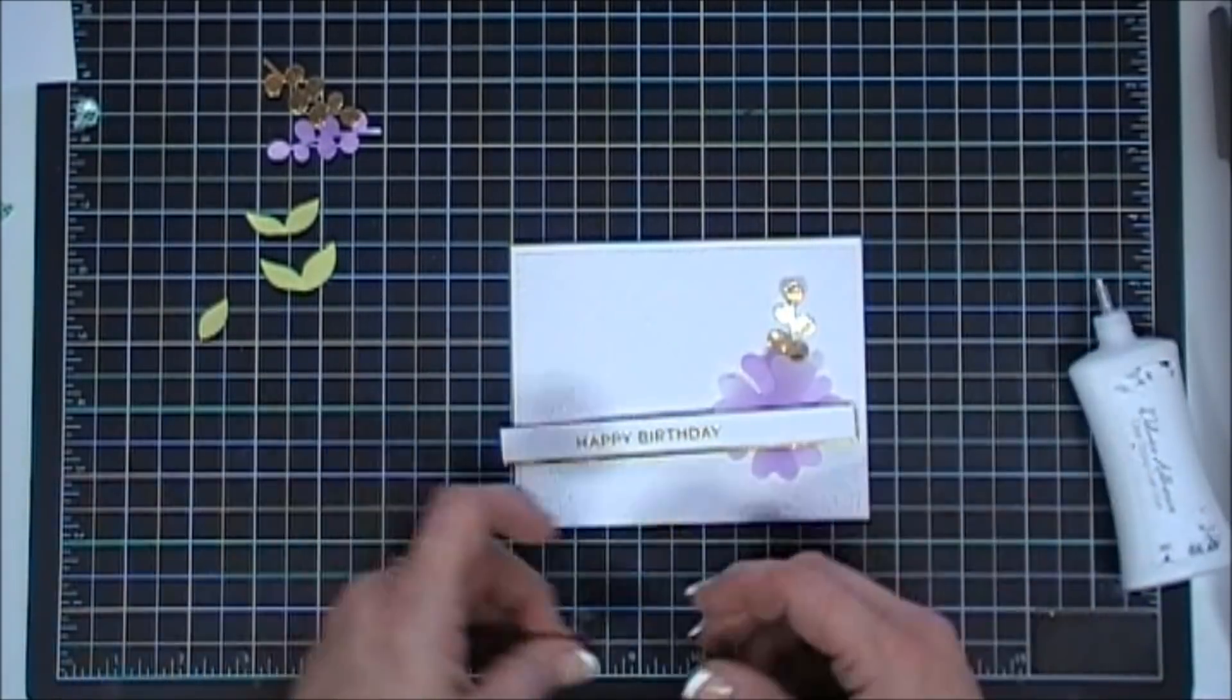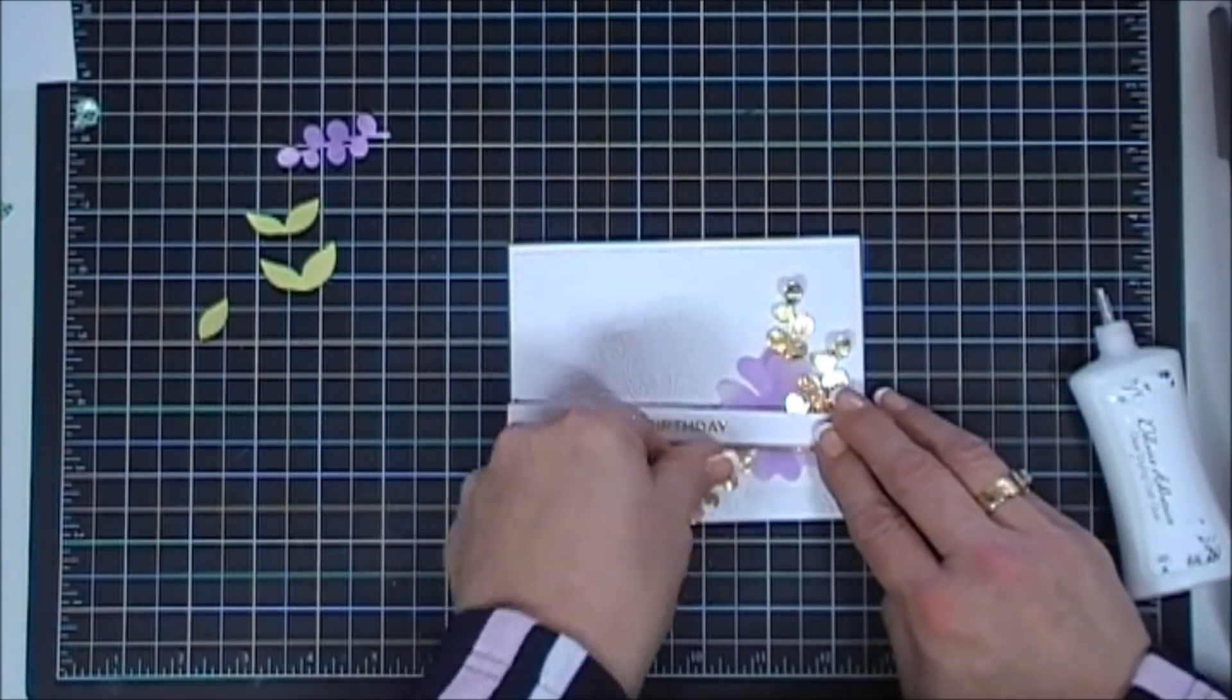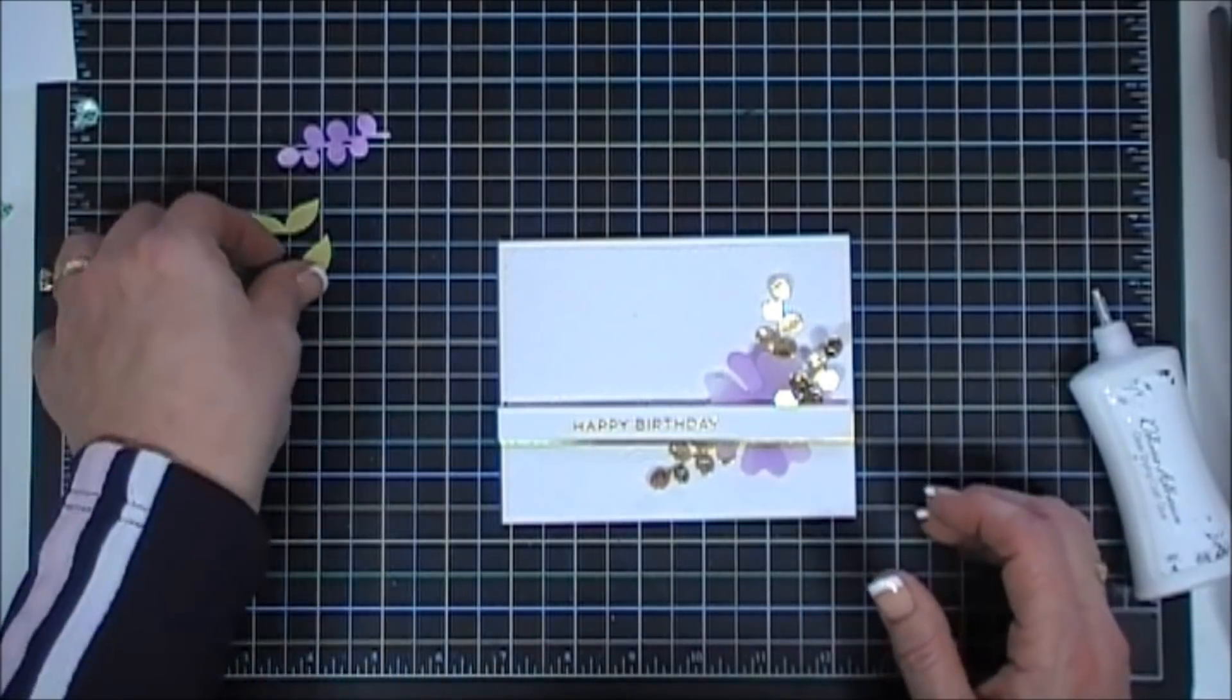So we'll add our flower and a few of the gold flourishes, and then we'll add a few greenery with the leaves.